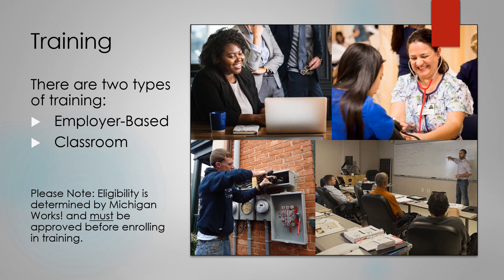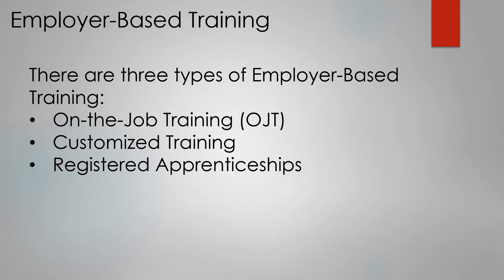Before any type of enrollment into training, eligibility is required and must be determined and approved by West Michigan Works. The three types of employer-based trainings are on-the-job training, customized training, and registered apprenticeship.